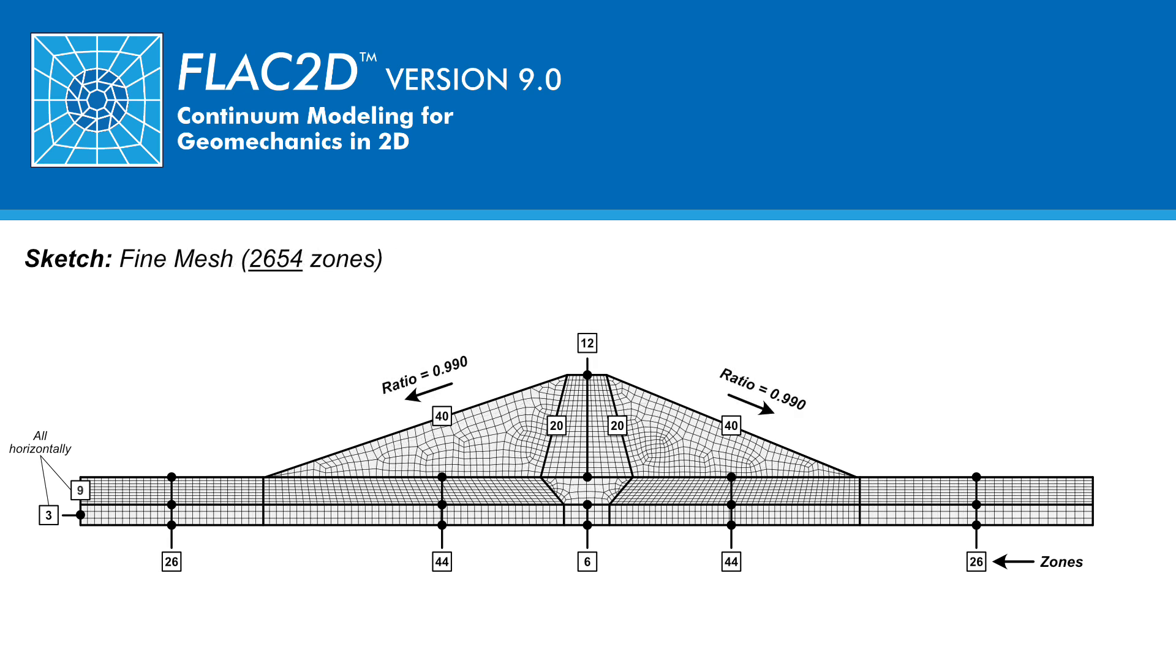The number of zones set along each mesh block are now shown for the fine mesh. Note that for this mesh, a zone multiplier other than 1 is used along the upstream and downstream slopes. For this model, a structured mesh was used in all but the shell and one portion of the core, for which an unstructured mesh was used.